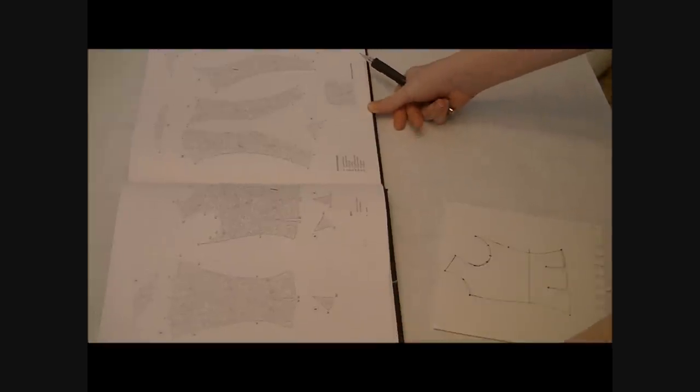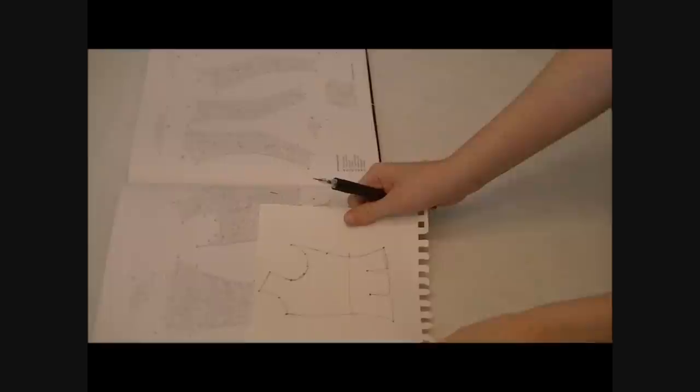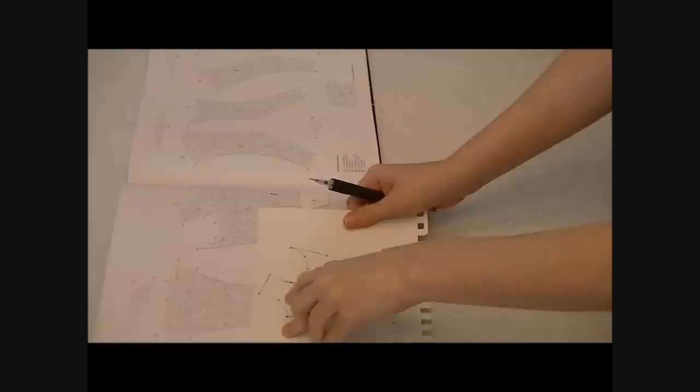To start with, you need your pattern and you need to find out what scale it is. Most books have it listed somewhere, in this case it's a 1 to 4 ratio, so every measurement you take from the scaled pattern you multiply by 4. Now I got some computer paper, but tracing paper is probably better. We want to go and trace our pattern because this is going to be our guide.